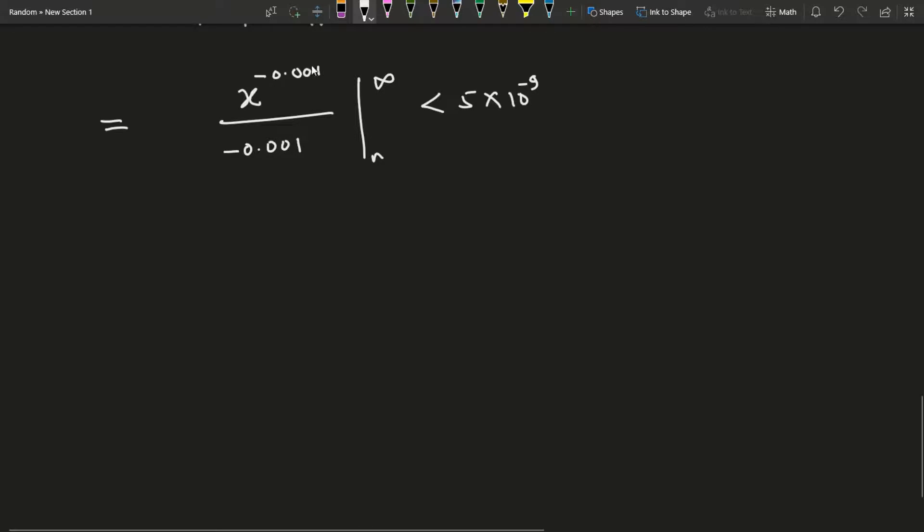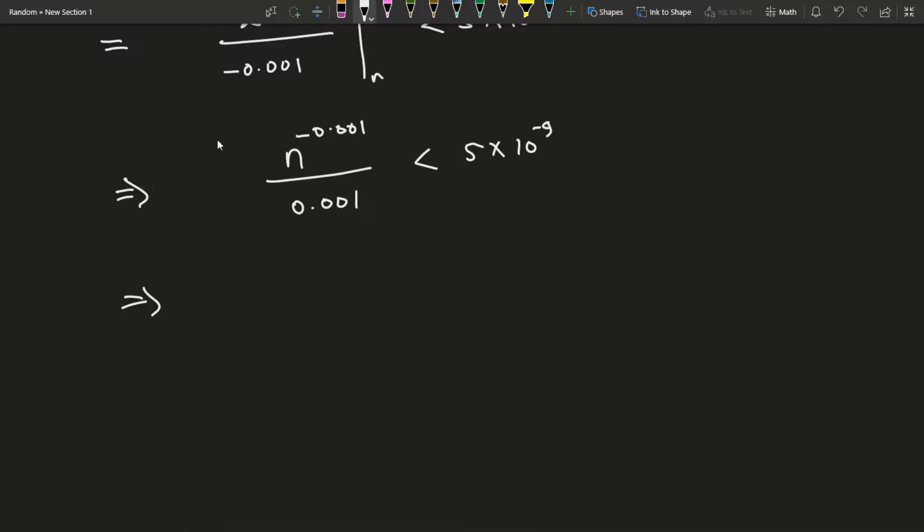If you plug in infinity this will go slowly but surely go to 0, so this whole thing is 0. Then if you plug in n you have negative negative become positive, so this will be 1 over negative 0.001 times n to the negative 0.001. This should be less than 5 times 10 to the negative 9.